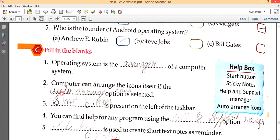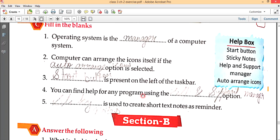Fill in the blanks. Operating system is the manager of a computer. Computer can arrange the icons itself if auto arrange icon option is selected. Start button is present on the left of the taskbar. You can find help for any program using the help and support.